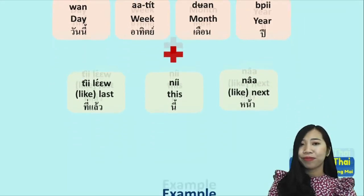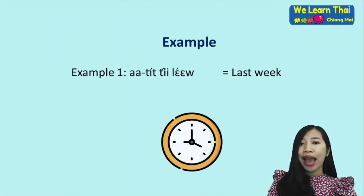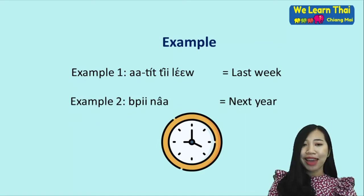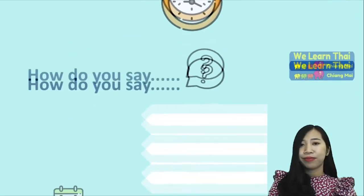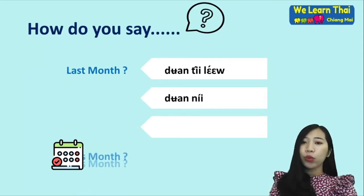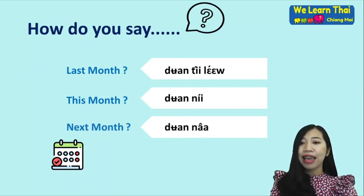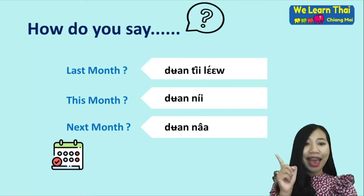We also work with the words thi leo meaning 'last', kooni meaning 'this', and na meaning 'next'. For example: aa thit thi leo — last week, pii na — next year. How do you say 'last month'? duean thi leo. This month is duean nii, and next month is duean na.